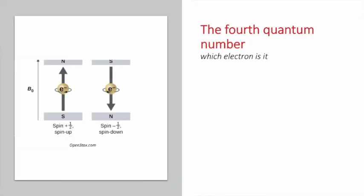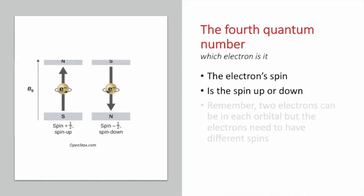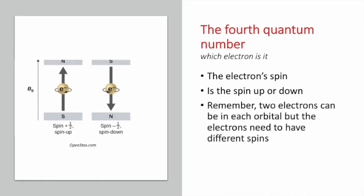The fourth quantum number, sometimes called M sub S, has to do with an electron's spin. We say that a spin is up or down. Even though two electrons can be in the same orbital, each of them needs to have a different spin. It's kind of like the idea that two electrons can be in the same room, but if they are, each of them must have a different spin.